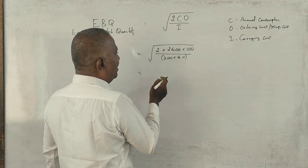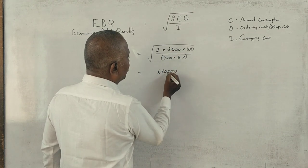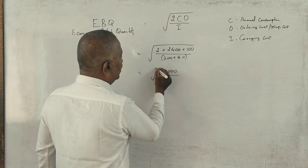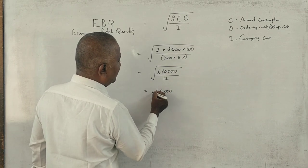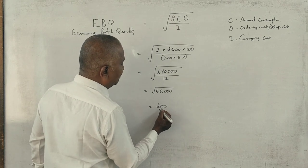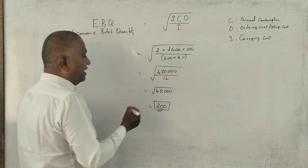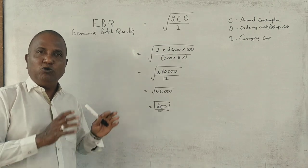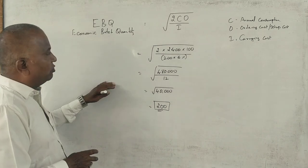Square root of 2 into 2400 into 100 divided by 12. This equals square root of 40,000. What is the square root? 200. So we have 200 units to manufacture. This is economic batch quantity. This is the first question to answer.